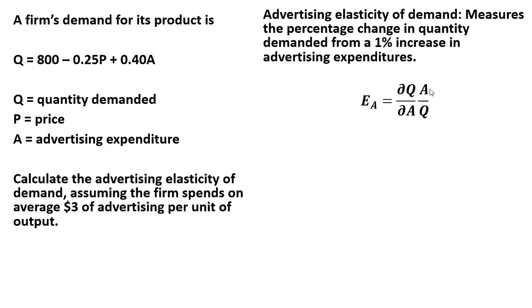And then the second part can actually be thought of as advertising per unit of output. A divided by Q is advertising per unit of output.